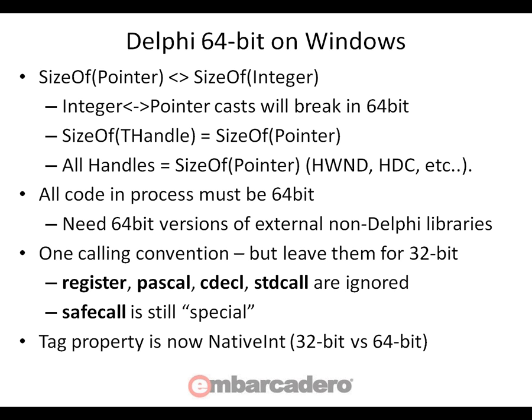In 64-bit Windows with Delphi 64, there's only one calling convention. The compiler will ignore register, Pascal, CDECL, and stdcall — those are all ignored in 64-bit land. But leave them in your source code so that when you're building 32-bit applications, those calling convention declarations will still work.